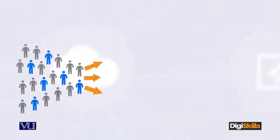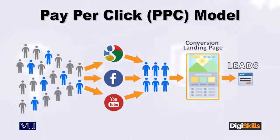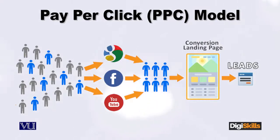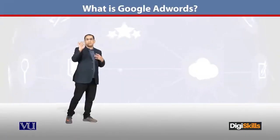It means that my advertisement appears when the user searches a keyword matching what I am offering as a company. When you click on the advertiser's website link, that is a click. Google will charge me as a company and advertiser only when a user clicks on my advertised website. This is pay-per-click.